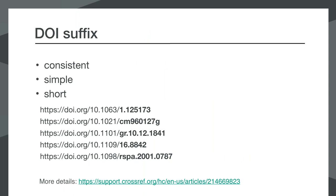We get lots of questions about creating the suffix — the part highlighted in bold on this slide. We have some guidelines for suffixes, but this is the really important part: you want to keep your suffixes consistent, simple, and short. It's good for them to be consistent so that you can easily look at one of your DOIs and ascertain which publication it comes from. You should establish a pattern that's easy to maintain, keep them simple, and keep them short so they don't take up lots of space in a reference list. There's a link to the full advice on suffixes in the slide.